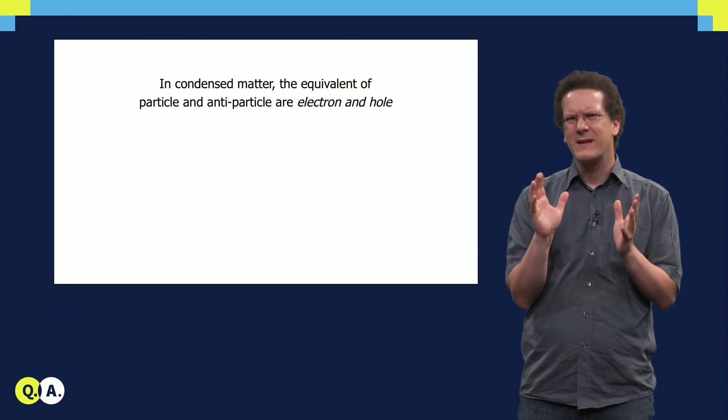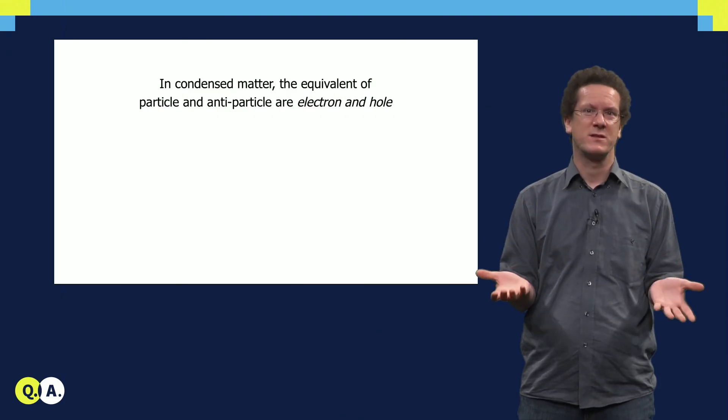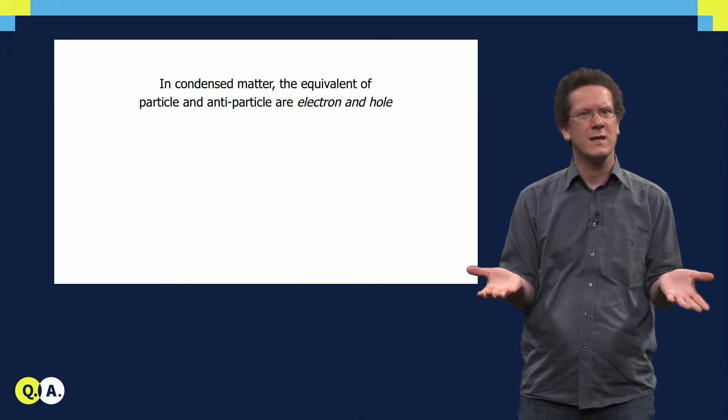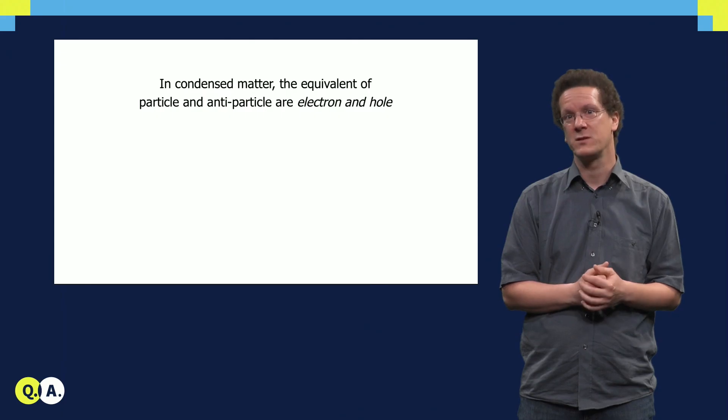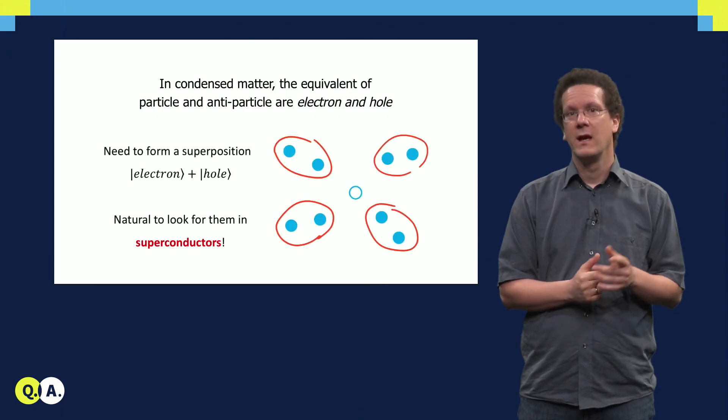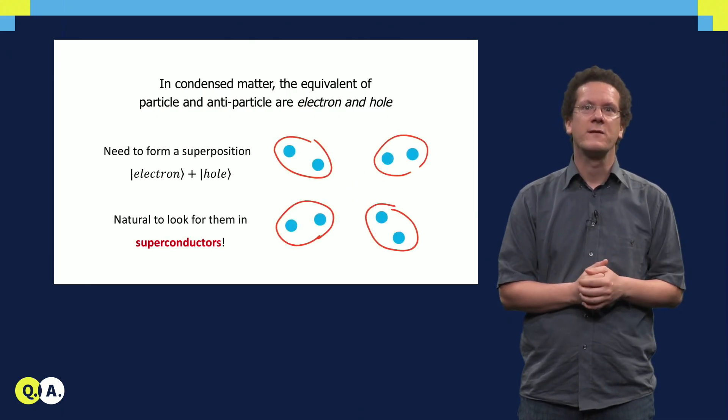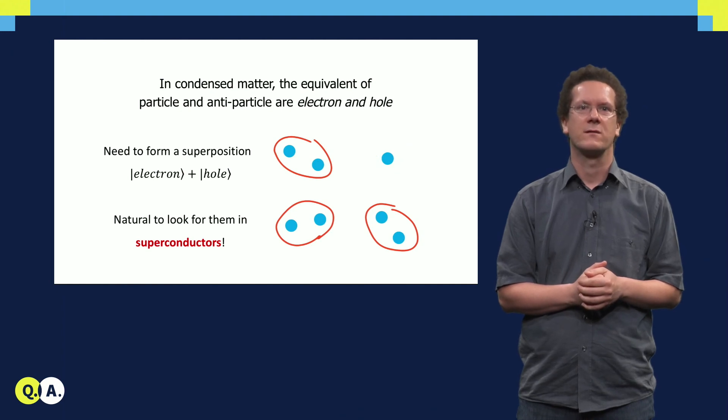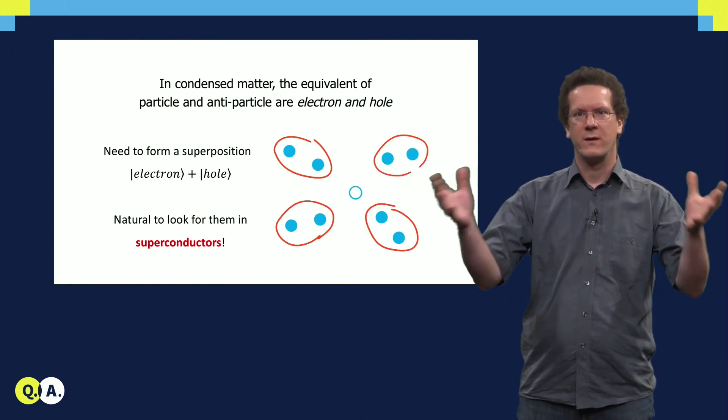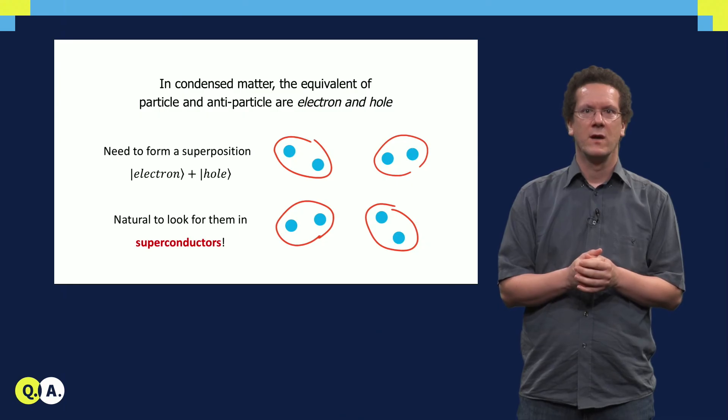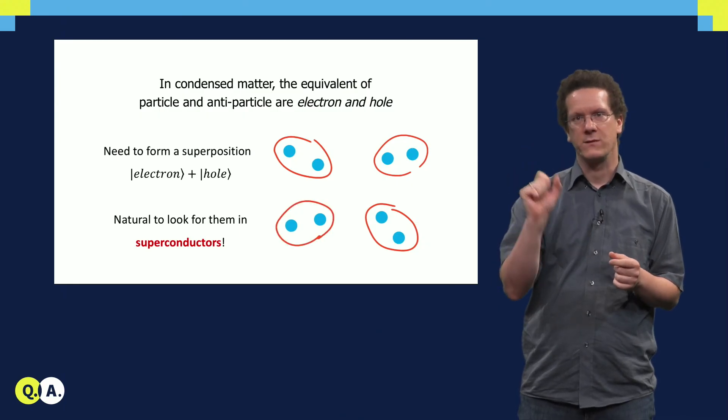The problem is, however, that electron and hole have opposite charge, so it is usually impossible to form a superposition of them. However, it turns out that a good system for Majoranas are superconductors. In superconductors we have a sea of Cooper pairs. Cooper pairs are states consisting of two electrons.